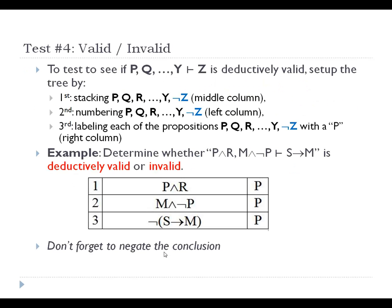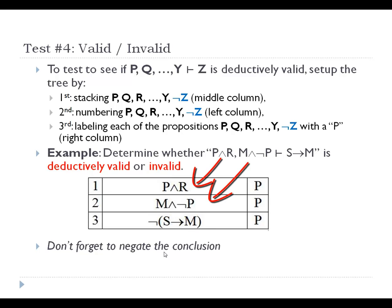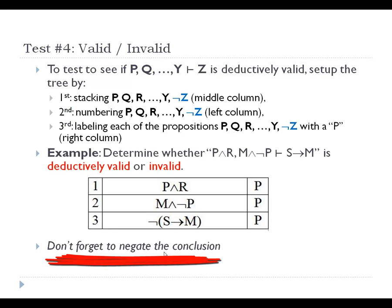To finish with an example: suppose we're asked to test whether the argument with premises P and R, and M and not P, therefore if S then M, is deductively valid or invalid. We write each of the premises on individual lines, then take the proposition to the right of the turnstile — the conclusion — and negate the whole thing. We don't negate just S; we write the literal negation of that whole conclusion on the final line. Make sure you negate the conclusion — that's the thing people often forget. Those are the four tests and four ways to set up a truth tree.